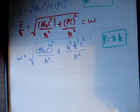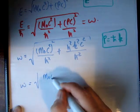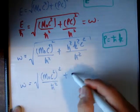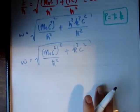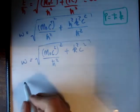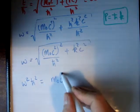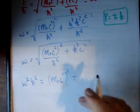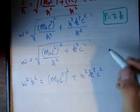Finally, if we just rearrange this, we find that omega equals the square root of m₀c² squared over h-bar squared plus k squared c squared. That's your dispersion relation. Some people also write it as: omega squared h-bar squared equals m₀c² squared plus h-bar squared k squared c squared. And that is your dispersion relation.